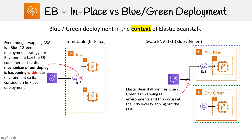Having the load balancer facilitate the switch of servers is a lot better than DNS, because with DNS we could have an interruption in service — not because the servers aren't ready, but because the DNS servers have to propagate the changes. So there could be some unavailability for servers.